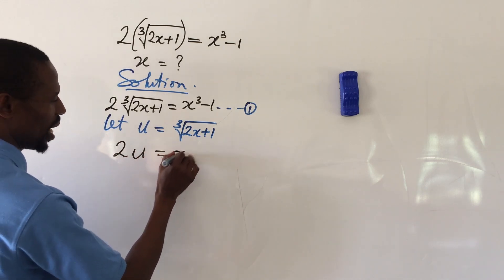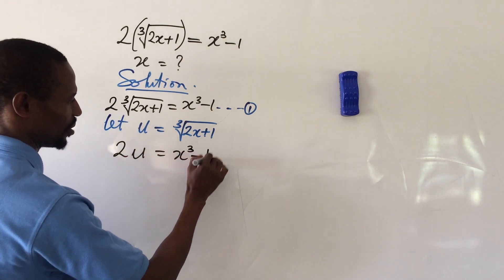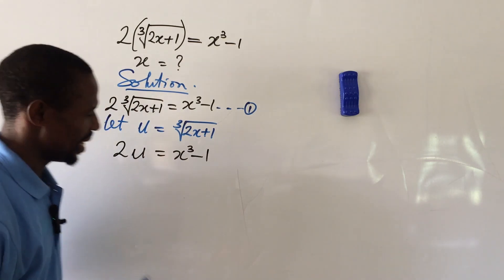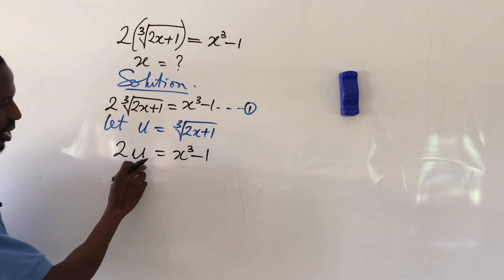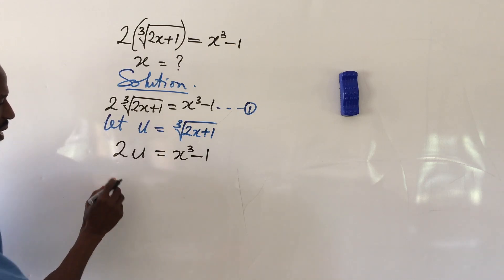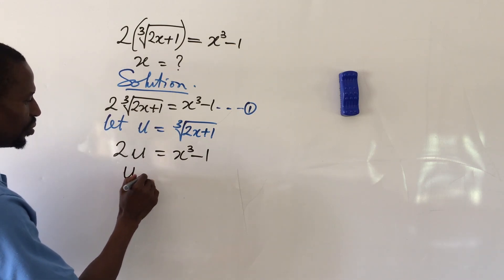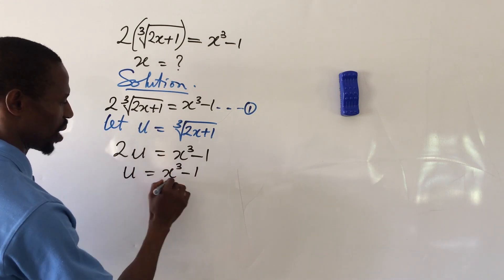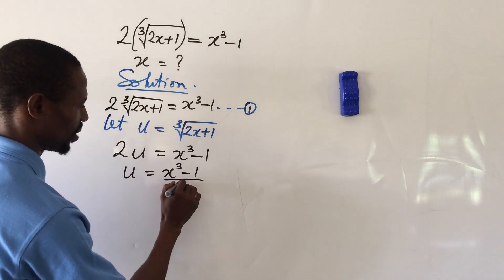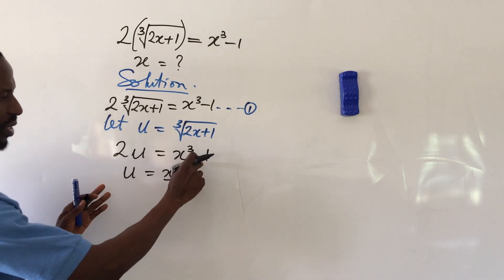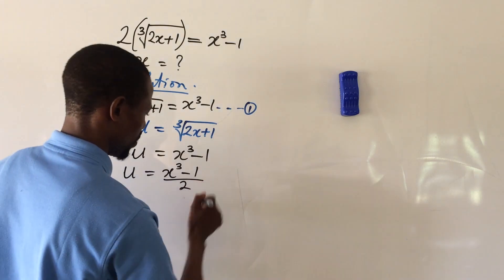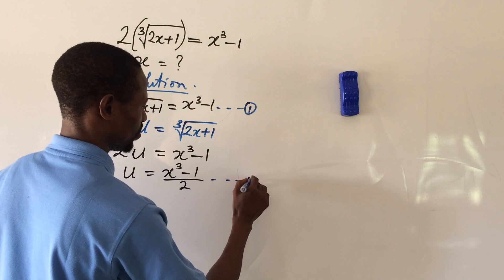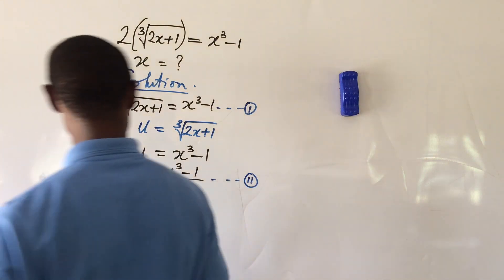With this substitution, equation one can now be written as 2u equals x to the power of three minus one. If we make u the subject of the formula, we divide both sides by two, giving us u equals (x³ − 1) all over 2. Let's label this as equation two.